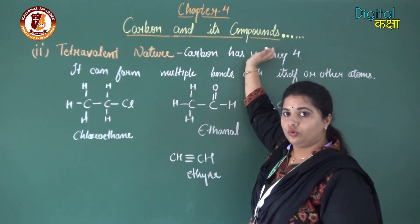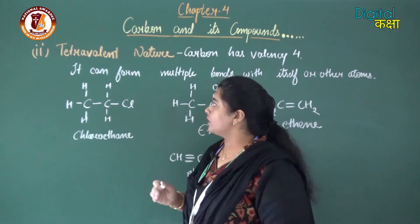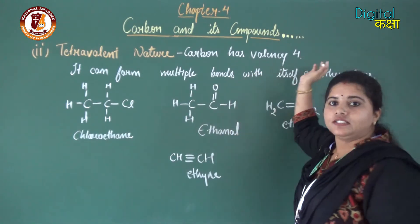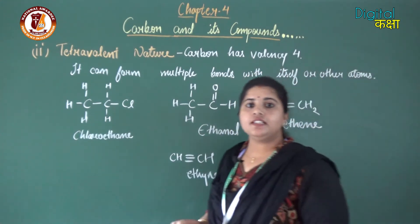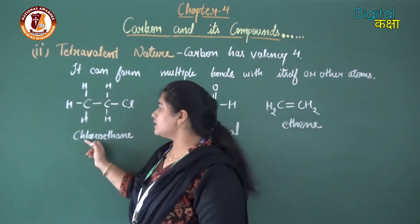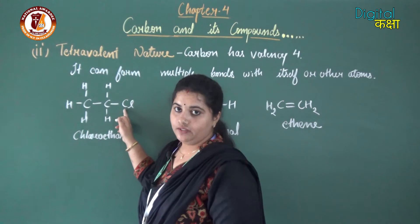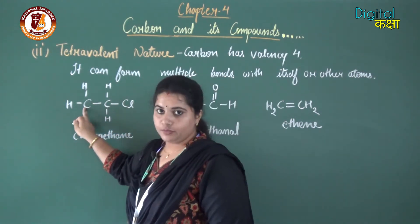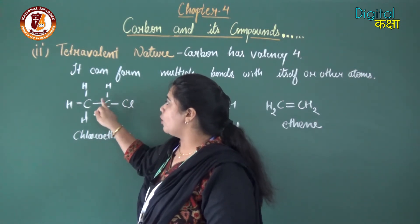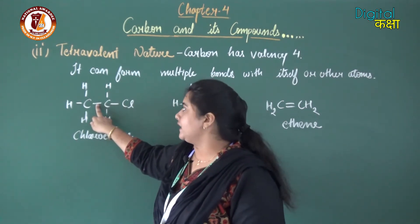After catenation, the next property is tetravalent nature. Tetra means four, valent means valency — carbon has a valency of four, meaning it has a tendency to make four covalent bonds. It can form multiple bonds — single, double, or triple — with itself or other atoms. For example, in chloroethane, carbon is bonded with chlorine, with another carbon, and with hydrogen, making four bonds in total as carbon is tetravalent.